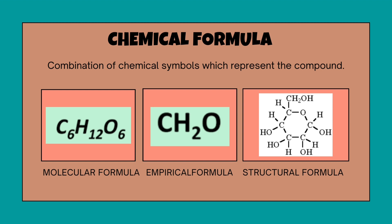A chemical formula may be a molecular chemical formula, which consists of the chemical symbols for the constituent elements followed by numeric subscripts describing the number of atoms of each element present in the molecule. An empirical formula represents the simplest whole integer ratio of atoms in a compound.